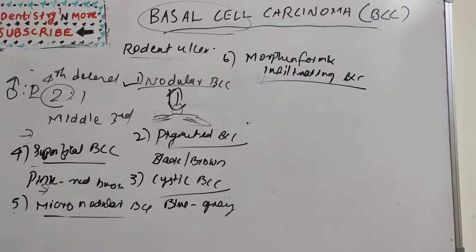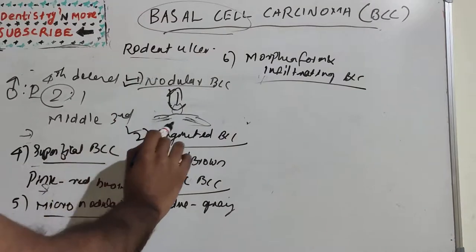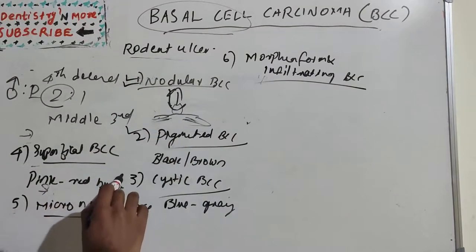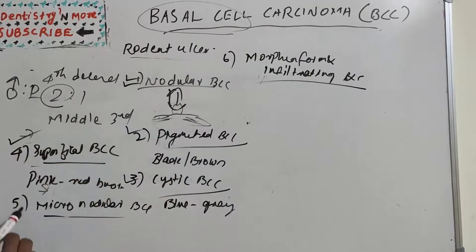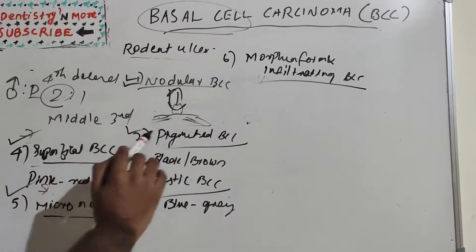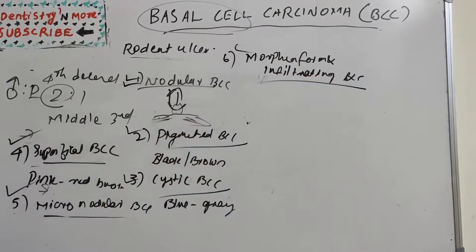In summary, the six types of basal cell carcinoma are: nodular, pigmented, cystic, superficial, micronodular, and morpheaform/infiltrating basal cell carcinoma.